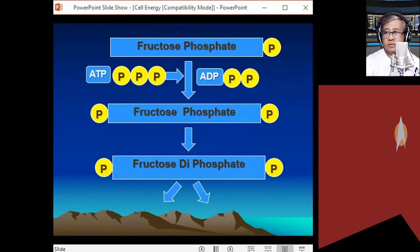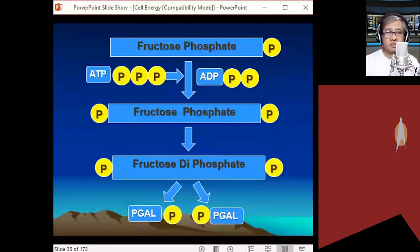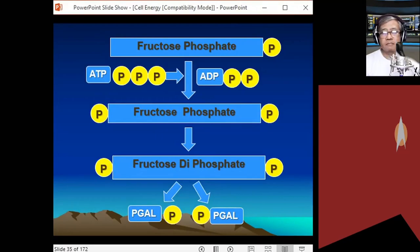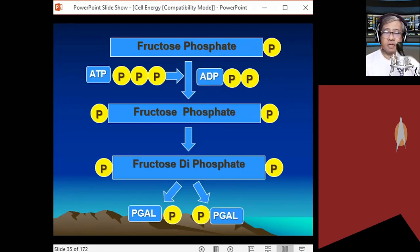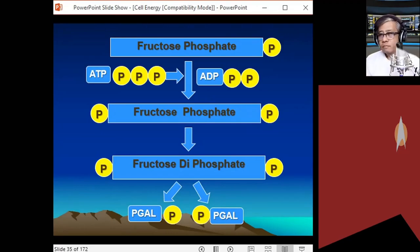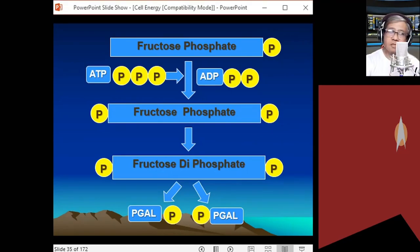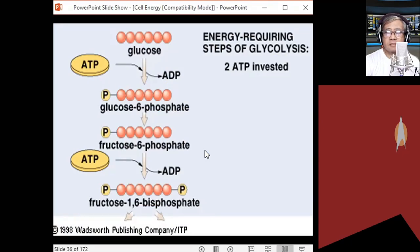Aldolase splits fructose diphosphate — which is fully activated and unstable — into two molecules of PGAL, or phosphoglyceraldehyde. Each PGAL contains one phosphate group. In this part of the reaction, the cell has consumed two molecules of ATP in activating glucose to fructose diphosphate, forming phosphoglyceraldehyde.